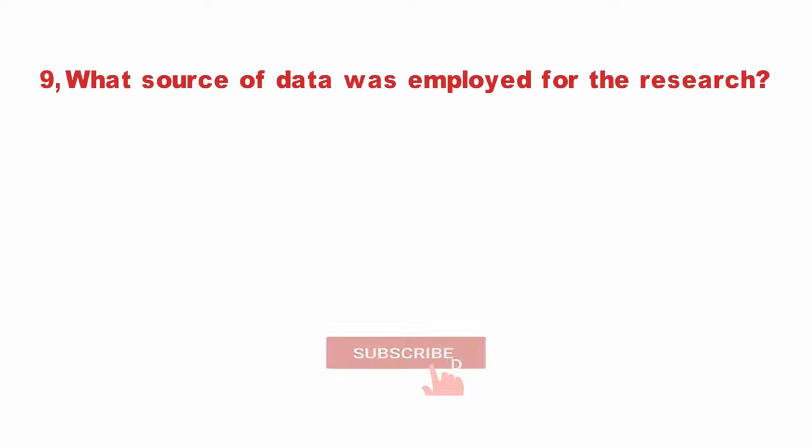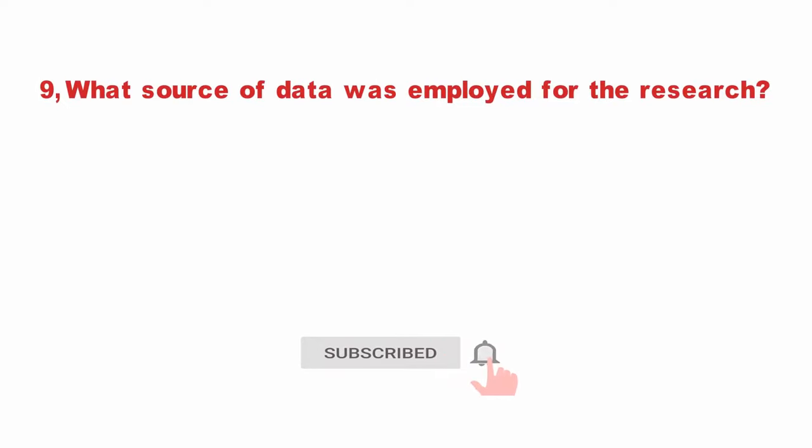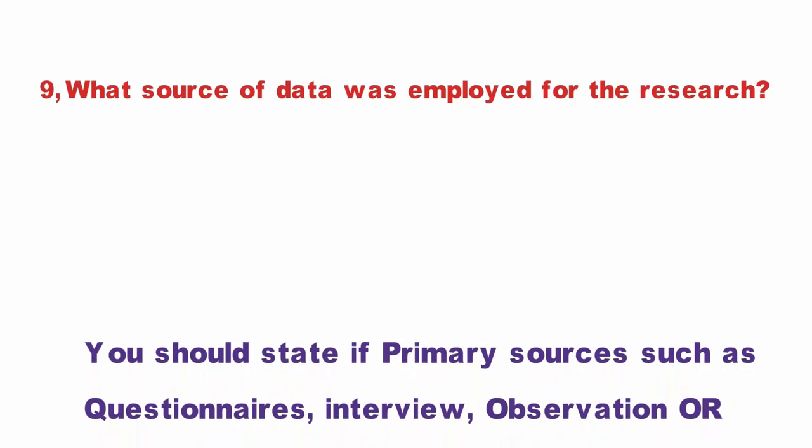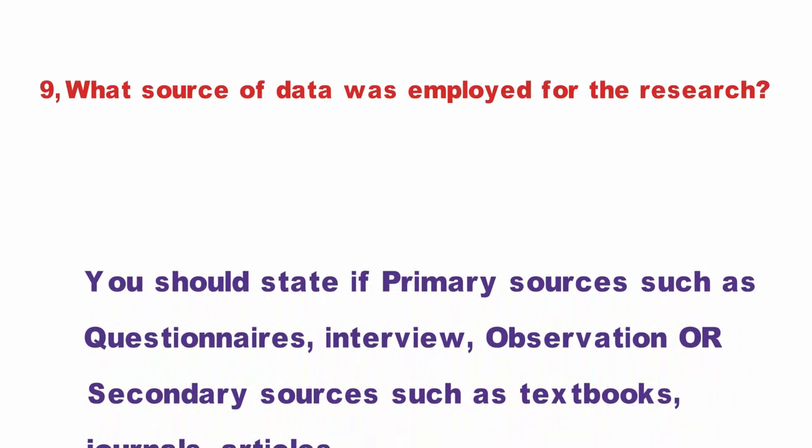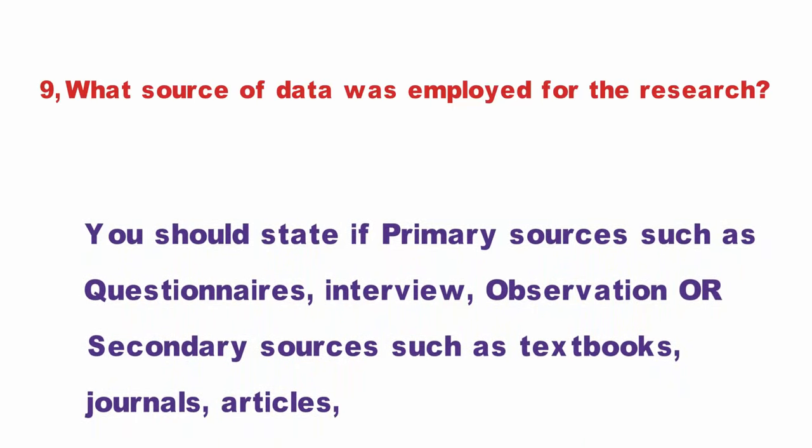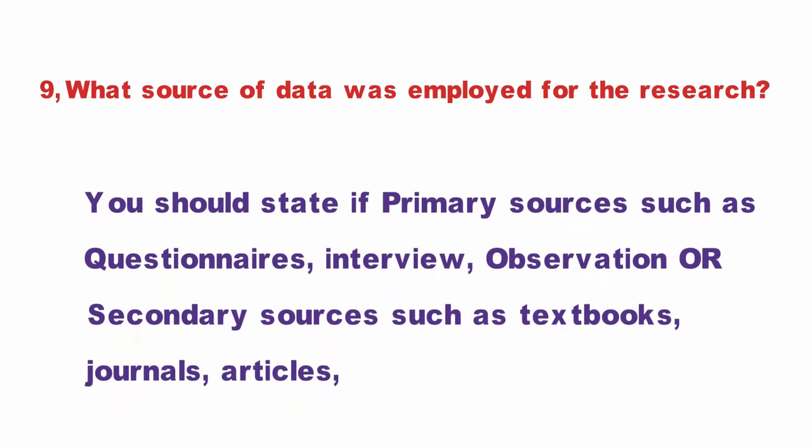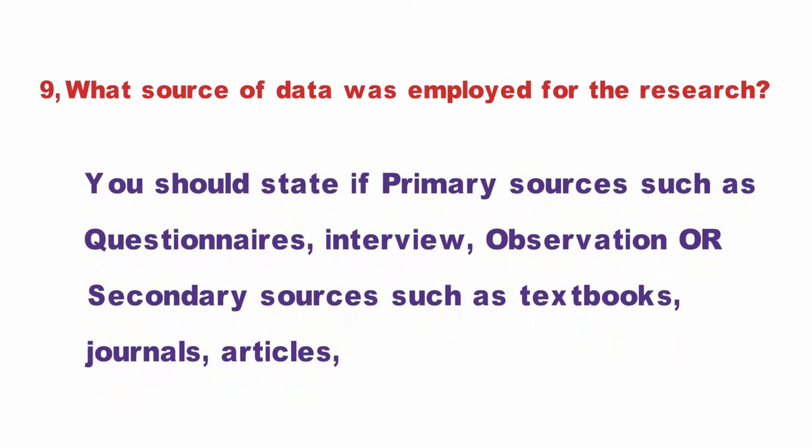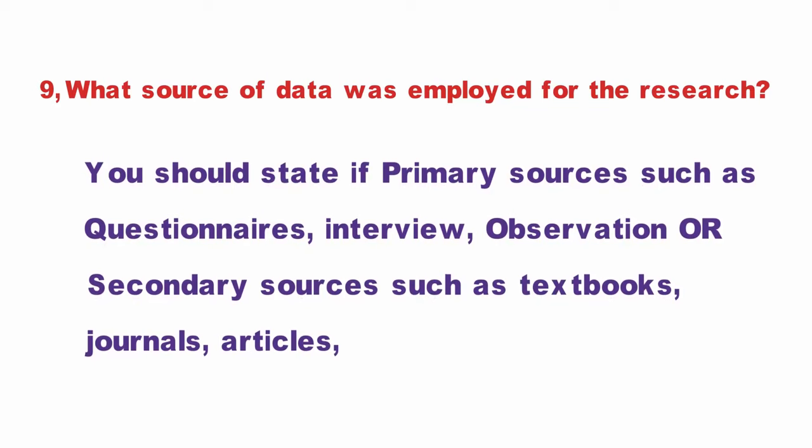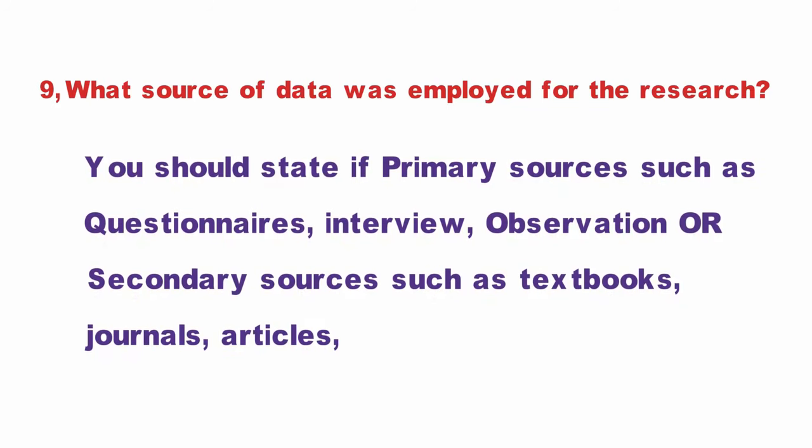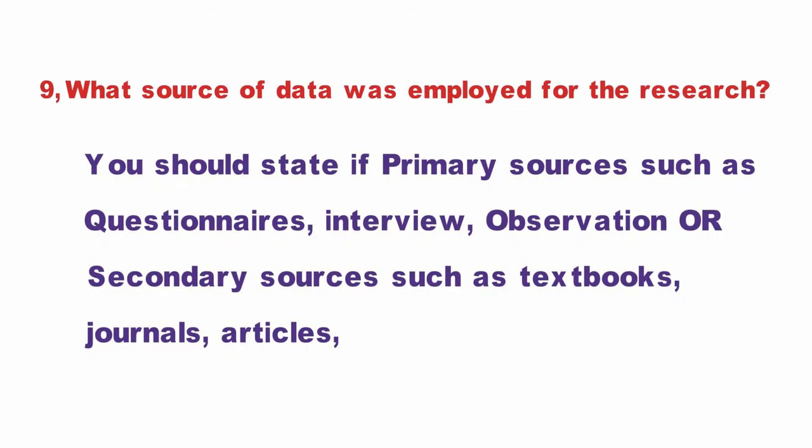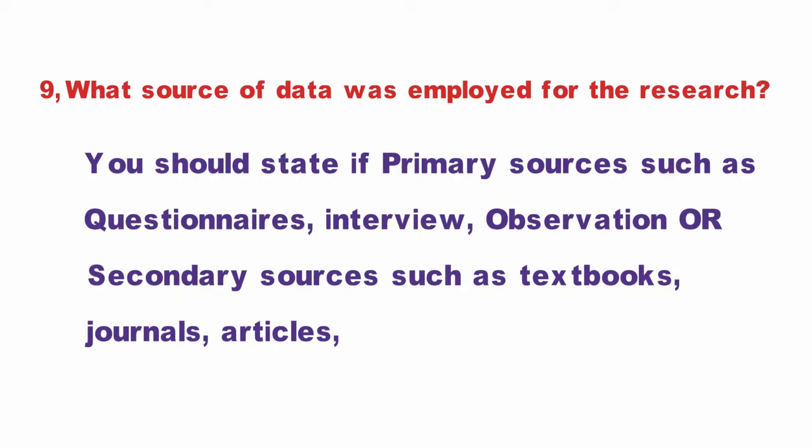Question number nine, what source of data was employed for the research? What type of data was employed, either primary data or secondary data? The answer is, you should state if primary sources such as questionnaires, interviews and observation were used, and if secondary sources like books, journals, and newspapers were used. You simply have to answer the nature and type of the data.